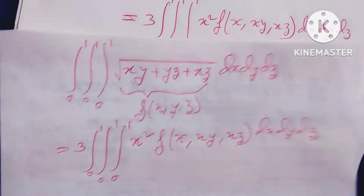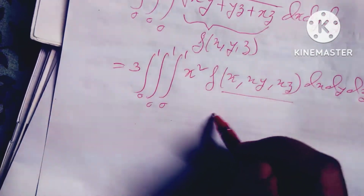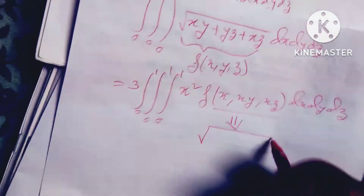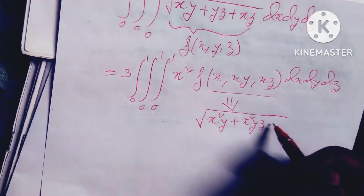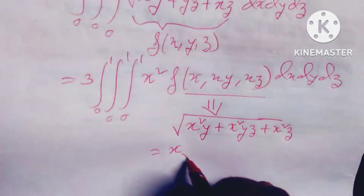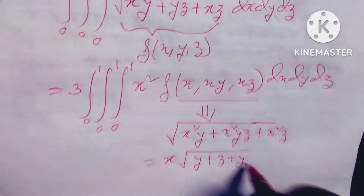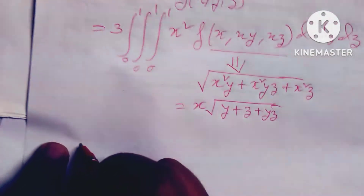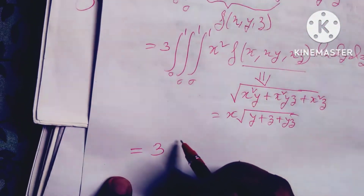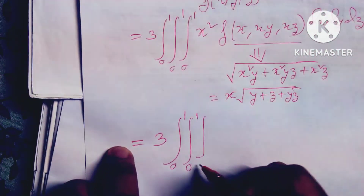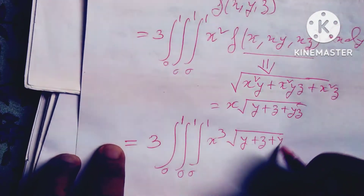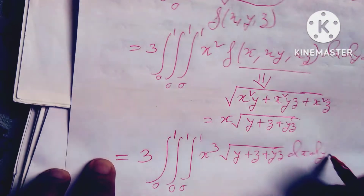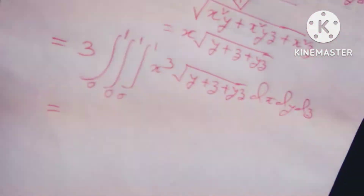Now f(x, xy, xz) equals root over x²y plus x²yz plus x²z, and it can be written as x into root over y plus z plus yz. Using this technique, we write: 3 into 0 to 1, 0 to 1, 0 to 1 of x³ · root over (y + z + yz) dx dy dz.